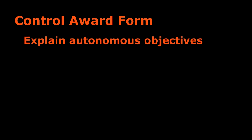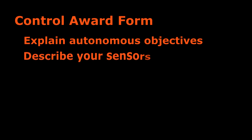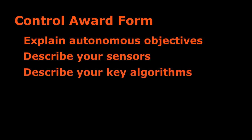On the control award form, you first need to explain what objectives you attempt in the autonomous period. If you have multiple autonomous programs that accomplish different objectives, you should specify which objectives you attempt in each different program. Next, you need to state what sensors you use and describe briefly how you use them. Next, you need to list your key algorithms and give a short description for each. Key algorithms are just the programs or parts of programs that are very important to your team.